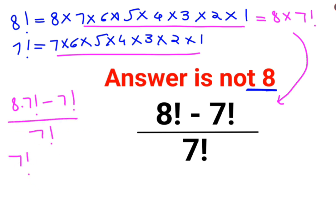What we will do is take 7 factorial common and we are left with 8 minus 1, upon 7 factorial.